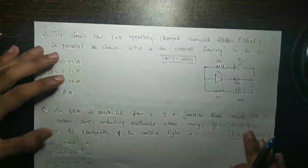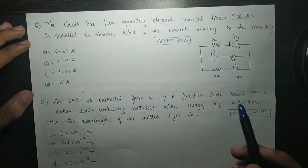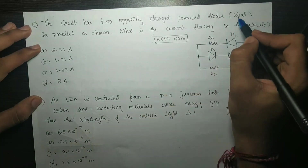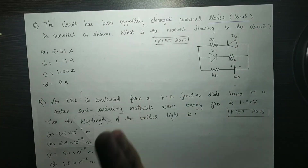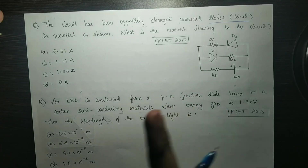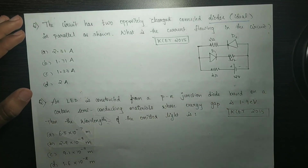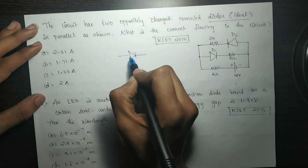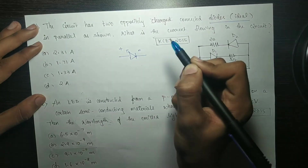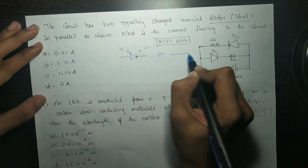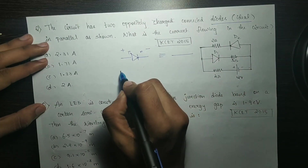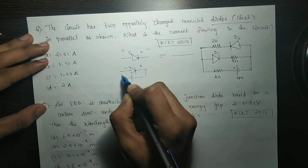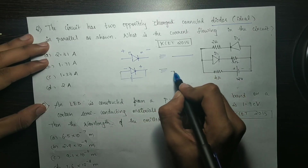Next question: a circuit has two oppositely connected diodes in parallel. For a diode in reverse bias, it acts as an open circuit. For forward bias — where P is positive and N is negative — it acts as a short circuit. If we connect negative voltage to positive, we get reverse bias and open circuit.